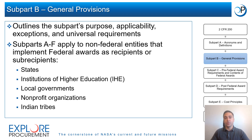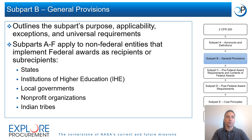Subpart B, General Provisions, outlines the purpose of 2 CFR 200, exceptions to the regulations, and universal requirements for federal agencies and award recipients. It establishes uniform regulations governing grants and cooperative agreements for federal agencies, and prohibits agencies from imposing additional or inconsistent requirements unless approved by OMB or required by federal statute, regulation, or executive order. Subparts A through F are applicable to non-federal entities that carry out federal awards as recipients or subrecipients.